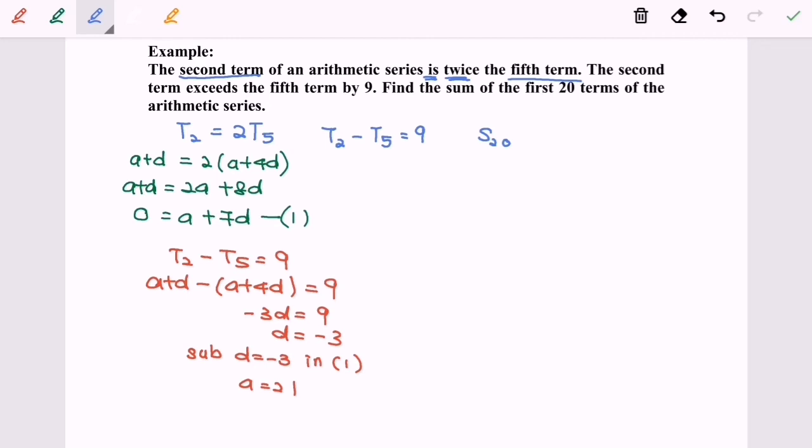Now we calculate S20. S20 equals n over 2, where n is 20. So 20 divided by 2, bracket 2a. Our a is 21, so we have 2 bracket 21, plus n minus 1, which is 19, times d, where d is negative 3.